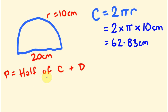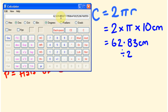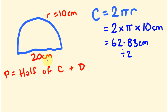That's our circumference, but we want half of the circumference. Half of our circumference is this amount divided by 2 — so 62.83 divided by 2 equals 31.42. So this equals 31.42 centimetres. This is our half circumference.